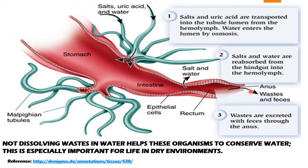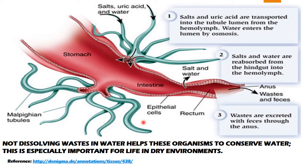What we saw in the previous diagram is that waste products are removed, while salts and water are reabsorbed back into the hemolymph. The final excretory product is uric acid, which is excreted out. Not dissolving waste in water helps these organisms to conserve water. Reabsorption of water and salts back into the body cavity — the hemolymph — is especially important in dry environment conditions.